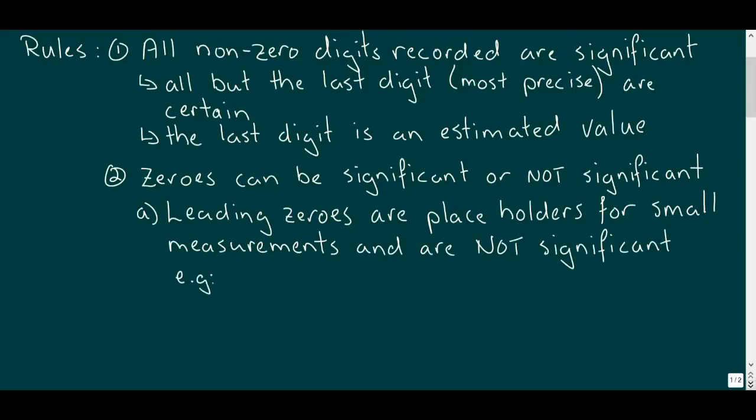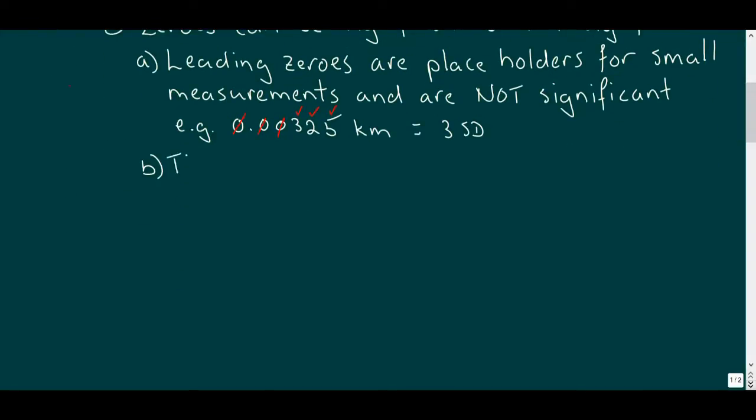We can consider a measurement of 0.00325 kilometers to determine the number of sig digs. The three, the two, and the five are non-zeros, so they're significant. But the three leading zeros just tell us how small the number is, so they're not, leaving us with three sig digs.